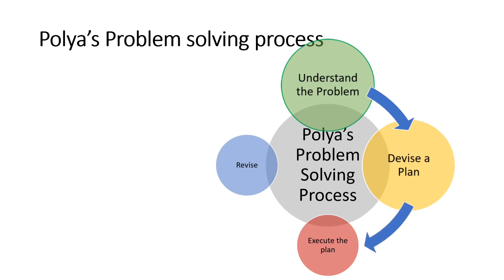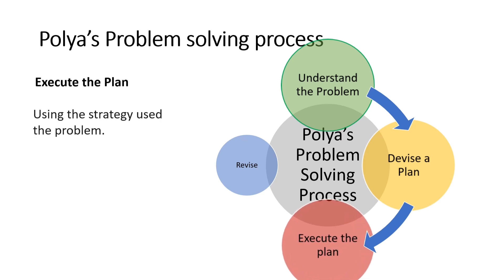The next stage is to execute the plan. This involves using the strategy or possible solution that simultaneously poses the least disadvantage and the greatest advantage. However, it must have met all the aforementioned criteria, like having union approval and meeting local standards.